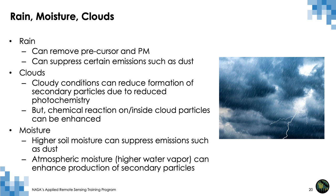Other factors also play a critical role. Rain is one of the removal processes for both PM2.5 and its precursors, and can also suppress certain emissions such as dust. Cloudy conditions can reduce formation of secondary particles due to reduced available sunlight, but some chemical reactions inside or on cloud particles can be enhanced in the presence of clouds. Higher soil moisture can suppress emissions such as dust, while atmospheric moisture or water vapor can enhance the production of secondary particles. Each of these meteorological conditions has a very specific impact on how air quality will change at the surface.